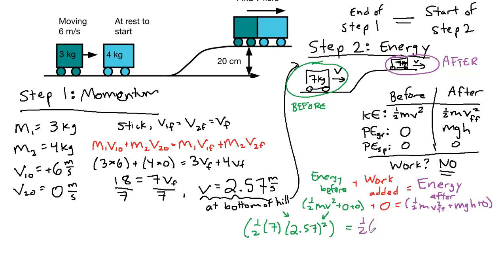On the right, we have 1 half times 7 times that unknown final final velocity squared plus mass, which is 7, times g, which is 9.8 times height, and that 20 centimeters, the height, we have to divide by 100. That's 0.20 meters, so 0.2.